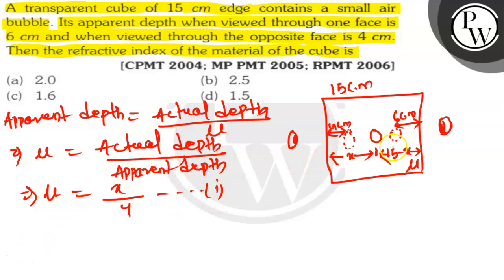So we will find out on the opposite side. Here mu is equal to 15-x upon, here the apparent depth is 6 cm. This is equation 2.